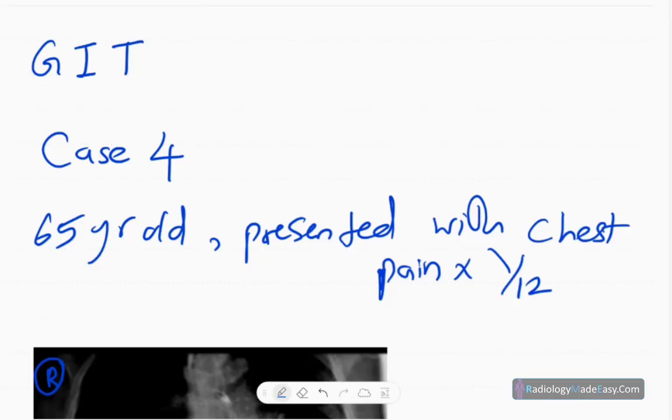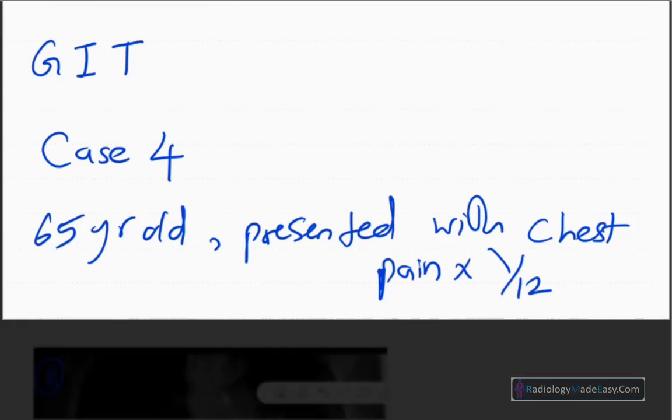Hello, welcome back everyone. Today we are going to discuss GIT contrast studies. Let's move to case number four. Our patient is a 65-year-old presented with intermittent chest pain for one month duration.